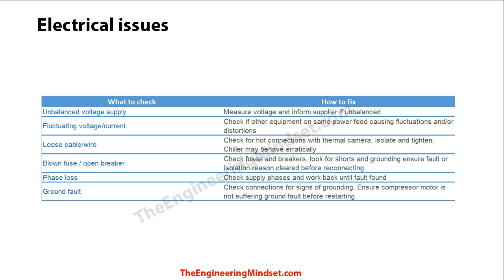Loose cables or wires are another issue — more common after a shutdown where work has been done and connections haven't been re-tightened properly, causing erratic chiller behaviour. An easy way to check for this is to use a thermal imaging camera on all connections — if any screws or terminals appear warm, that indicates a loose connection.